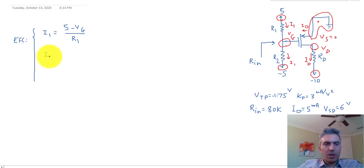For R2, I1 would be Vg minus minus 5 divided by R2. For the resistor Rd, we have Id equal to Vd plus minus minus 10, basically plus 10, divided by Rd.